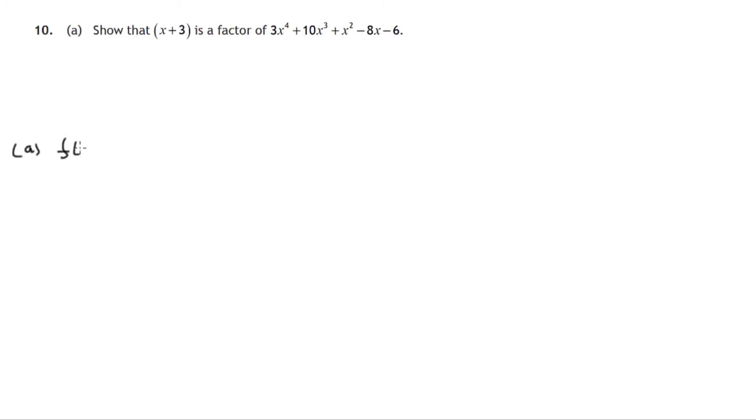We'll call the polynomial f of x. So that's a fourth degree polynomial. Now if we're trying to show that x plus 3 is a factor, we have to divide it and show that the remainder is equal to 0. Suppose we have 8 and we're dividing it by 4. It goes two times with a remainder of 0. Therefore 4 is a factor of 8. We do the same in this case.